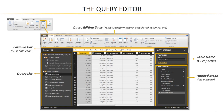Last but certainly not least, the Applied Steps pane in the lower right is really powerful. Every time you make a change to your data — every time you apply some sort of shaping or transformation — Power BI will record an applied step using MCode and add it to the list. Every time this connection is refreshed, Power BI will run through that same set of applied steps to shape and transform your data. That's a great way to automate things like data cleansing or ETL processes — you record it once, and then you're good to go.